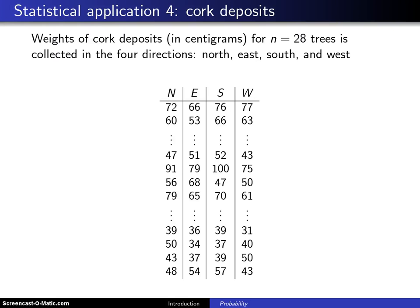So far we have looked at three different statistical applications, and the reason that we look at statistical applications is that a lot of the concepts that come up in statistical applications are mirrored in the probability concepts that are going to be presented in this class. The first application had to do with ball bearing failure times, which was a univariate data set collected in millions of revolutions. The second data set concerned the eruption time and the waiting time at Old Faithful Geyser in Yellowstone National Park. And then the third application was warranty claim times, which again was a bivariate data set.